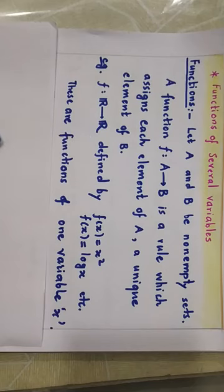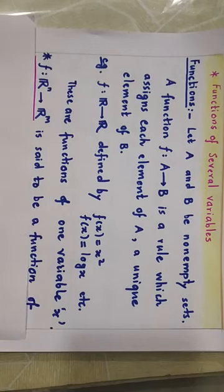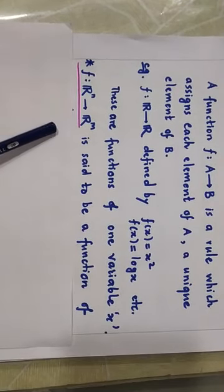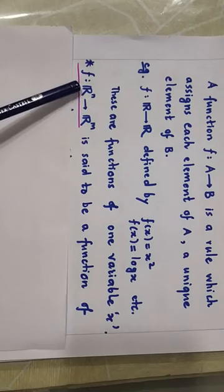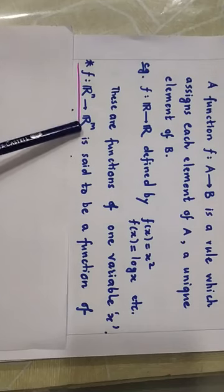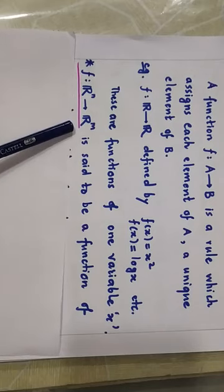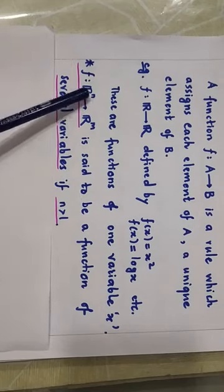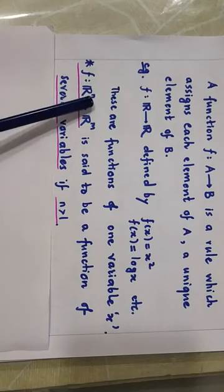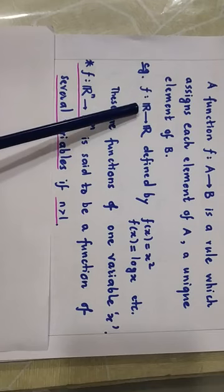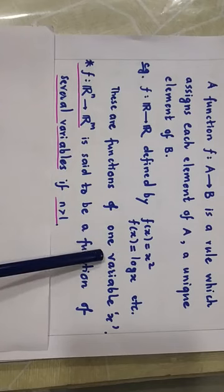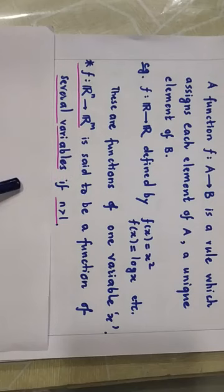Now we will come to the definition of functions of several variables. If we have f which is a function from Rⁿ to Rᵐ — where Rⁿ may be R², R³, etc. — a function f from Rⁿ to Rᵐ is said to be a function of several variables if n is greater than 1. If n equals 1, then the domain has only one variable and it is a function of one variable. If n is more than 1, then it is a function of several variables.